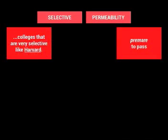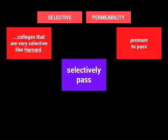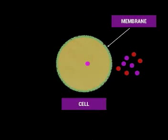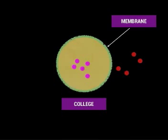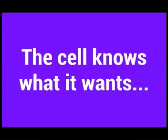Together, the words mean to selectively pass. The cell membrane selects certain things to go through, just like a college selects certain students but not others. Because, just like in relationships, the cell knows what it wants.